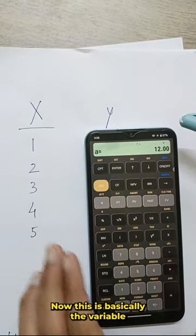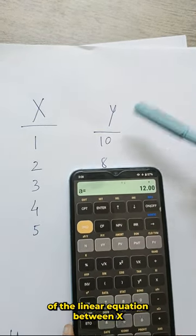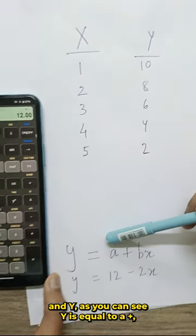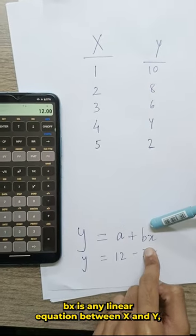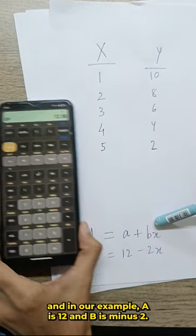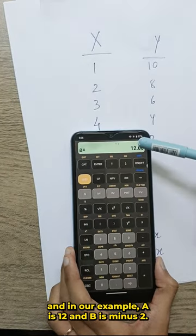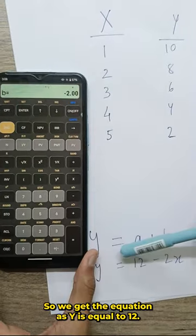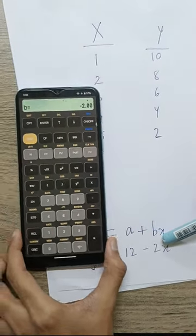Now, this is basically the variable of the linear equation between x and y. As you can see, y is equal to a plus bx is any linear equation between x and y. And in our example, a is 12 and b is minus 2. So, we get the equation as y is equal to 12 plus minus 2x.